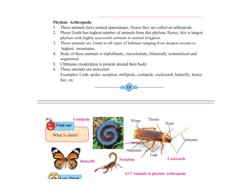They are found in all types of habitat — in the mountains, in the house, everywhere. The body of this animal is triploblastic, coelomate, bilaterally symmetrical, and segmented. A chitinous exoskeleton is present around their body. Like humans have an endoskeleton of bones, these animals have an exoskeleton — a covering around their body made up of chitin. These animals are unisexual, meaning male and female are separate.